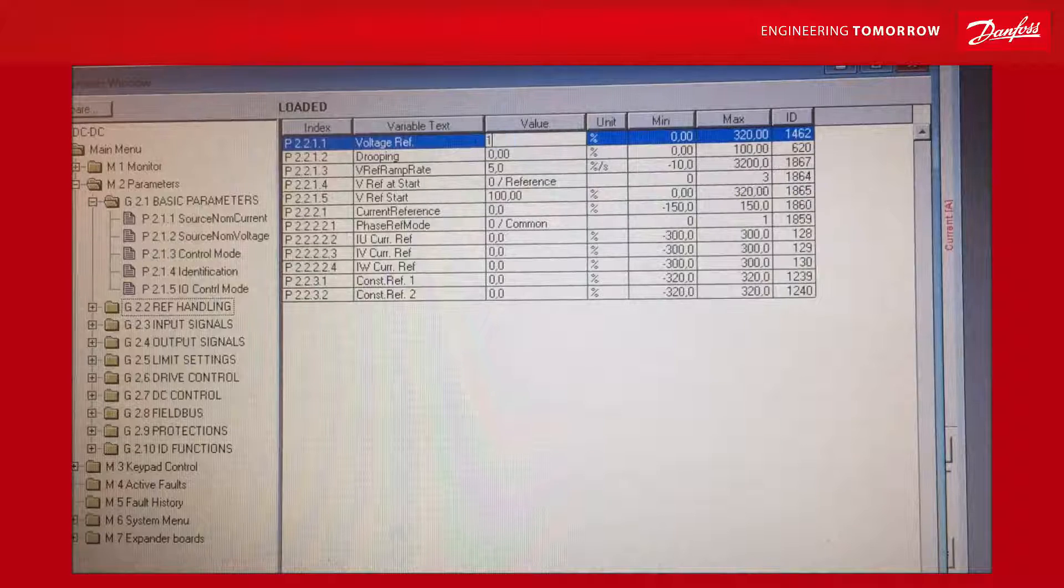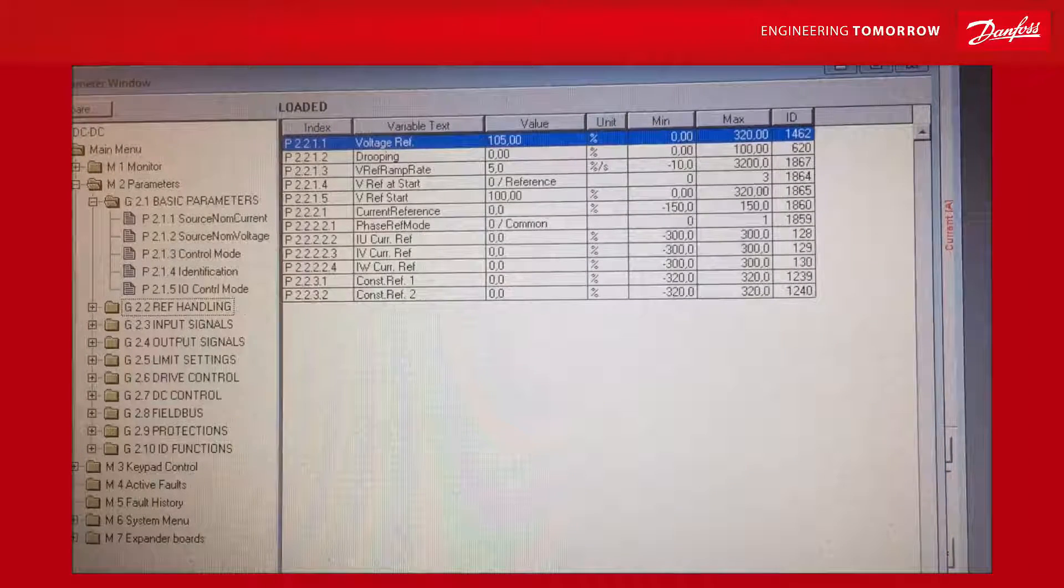So if I aim for let's say 105, the current should go then in opposite direction.